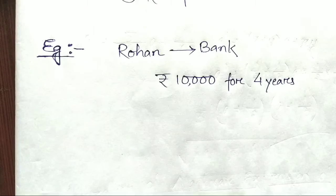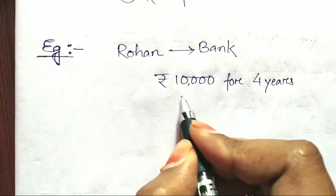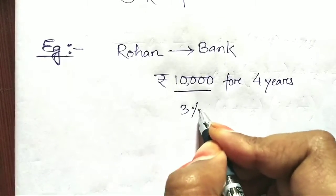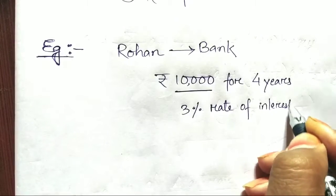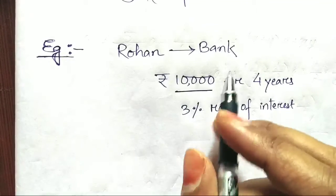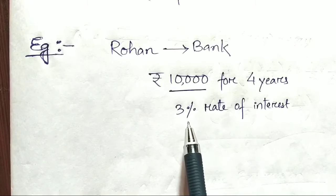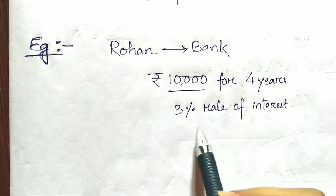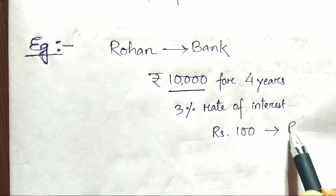Children will deposit for 5 years. The amount of money — if we have a 3% rate of interest in the bank, then the bank gives 3% rate of interest. Whether it is a bank or a scheme, we get 3% rate of interest.